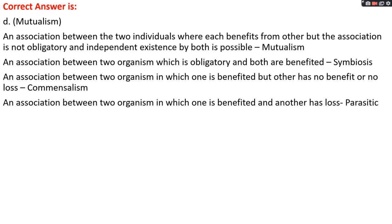A slight difference between mutualism and symbiosis: in symbiosis the association is obligatory and organisms cannot exist independently without it. But in mutualism they can exist independently too. An association between two organisms in which one is benefited completely while another has neither benefit nor loss is known as commensalism. An association where one is benefited and another is completely in loss is known as a parasitic association.